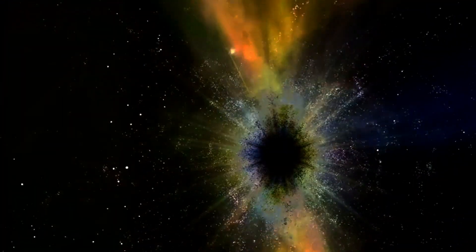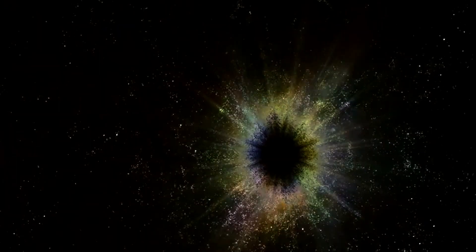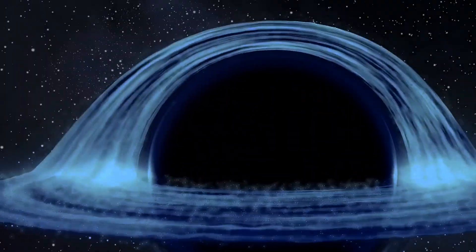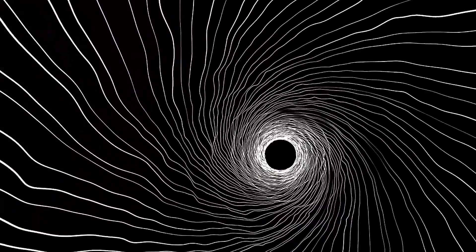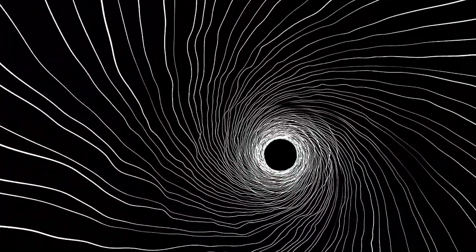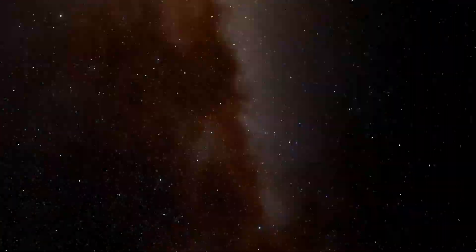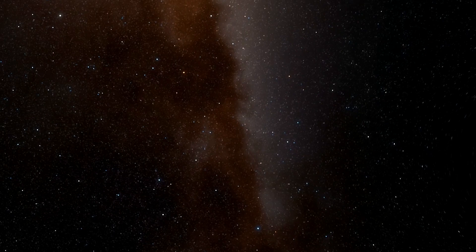There's a debate about what happens to information that falls into a black hole. The information paradox arises from quantum mechanics suggesting information can't be destroyed, while general relativity suggests it can't escape a black hole. Inside the event horizon, all paths lead to the singularity. It's theorized that space and time as we understand them cease to exist in any familiar way.